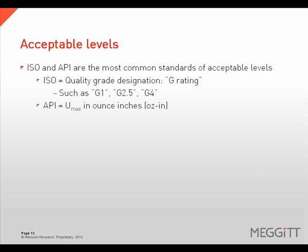To determine acceptable levels of unbalance, there are two standards commonly used: the ISO and API standards. ISO assigns a G rating based on the amount of residual imbalance. The API standard designates the remaining unbalance as Umax, expressed in ounce inches.